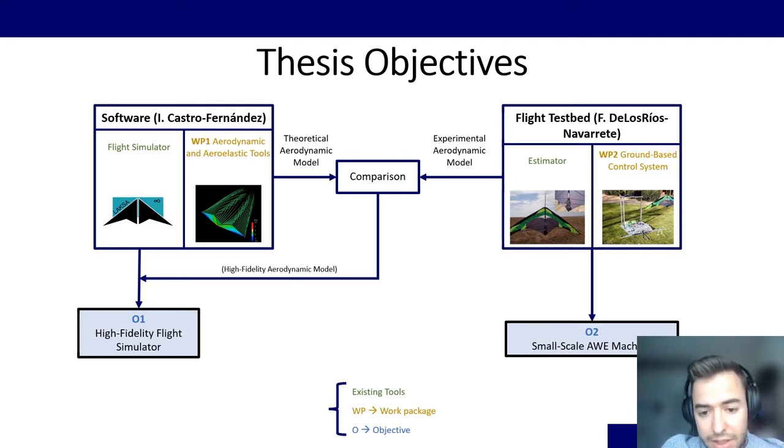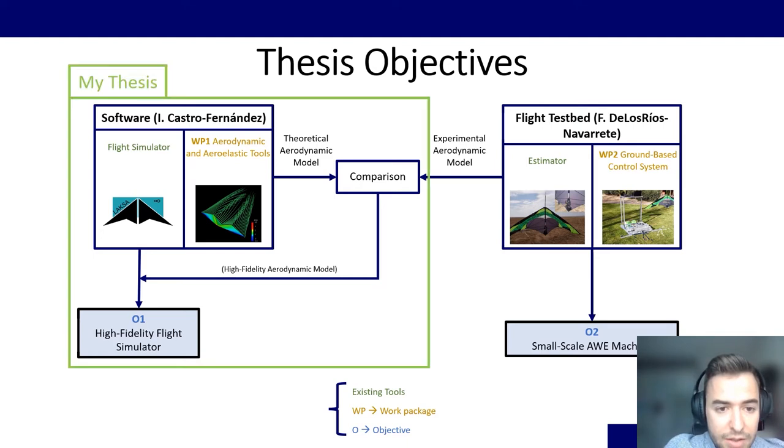And also the second objective of the group is to create, to generate a small-scale AWE machine. So just to put bounds into my thesis, this would be my thesis, basically the software package and the comparison between both of them.